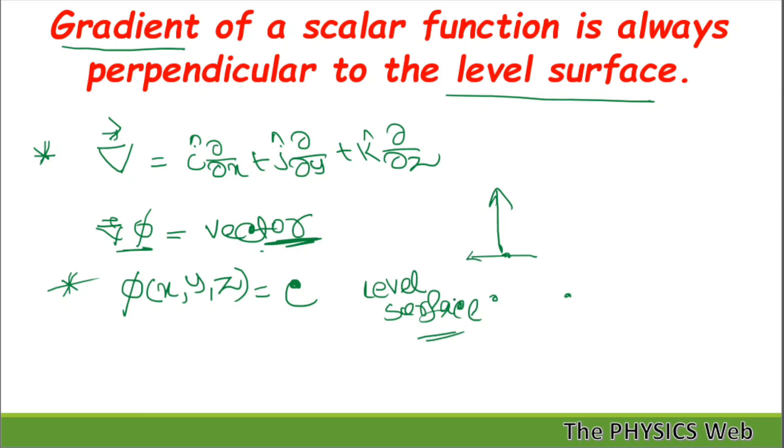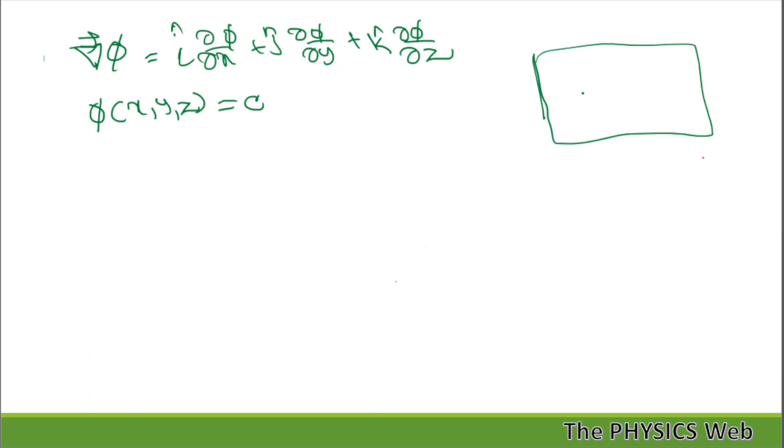Gradient of a scalar function mathematically can be expressed as i cap ∂φ/∂x plus j cap ∂φ/∂y plus k cap ∂φ/∂z. And let us define this level surface as φ(x,y,z) equals to c. So we are having a surface for which phi value is constant at every point.